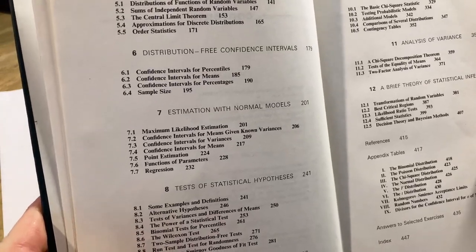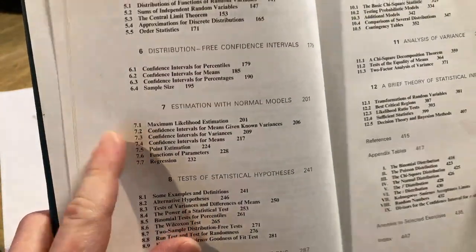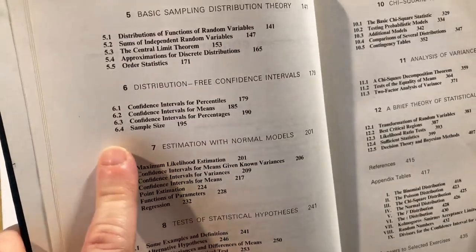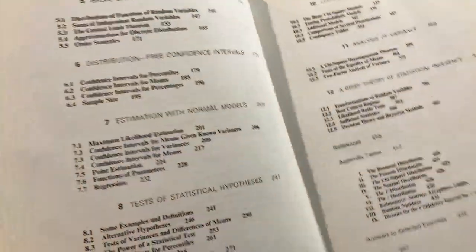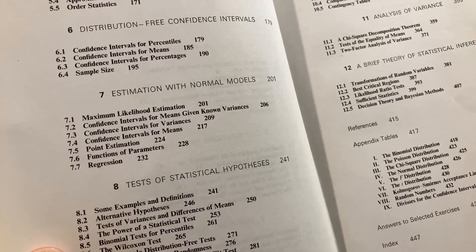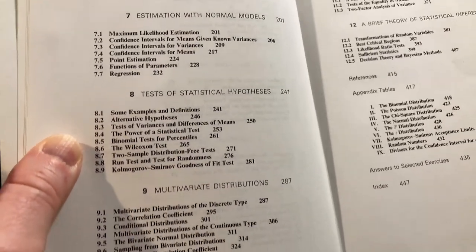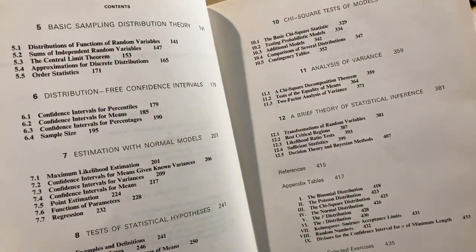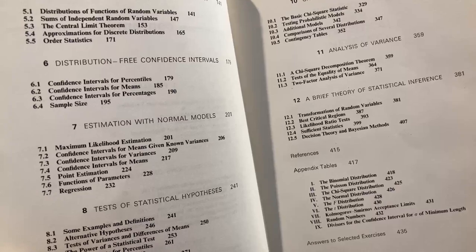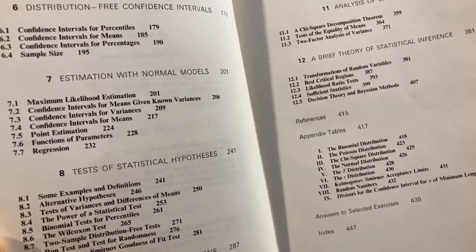Basic sampling distribution theory. Book has a really good smell. Distribution-free confidence intervals. This is cool, right? Distribution-free confidence intervals. This is something that's just interesting. You don't see that sometimes. Estimation with normal models. Test of statistical hypotheses. Multivariate distributions. Chi-square test of models. Analysis of variance. And a brief theory of statistical inference. And then you have some answers to selected exercises.